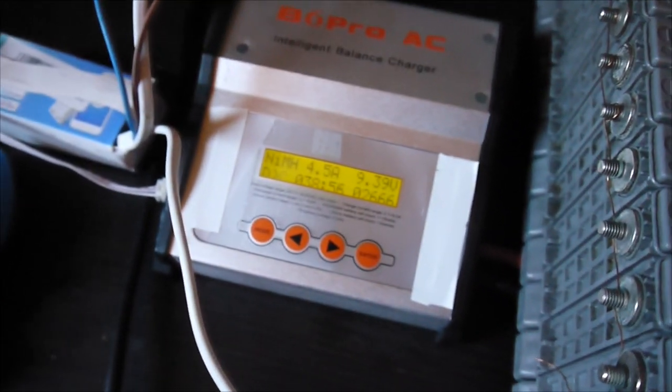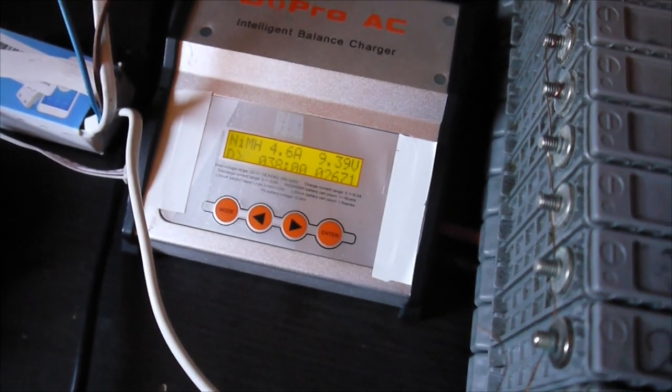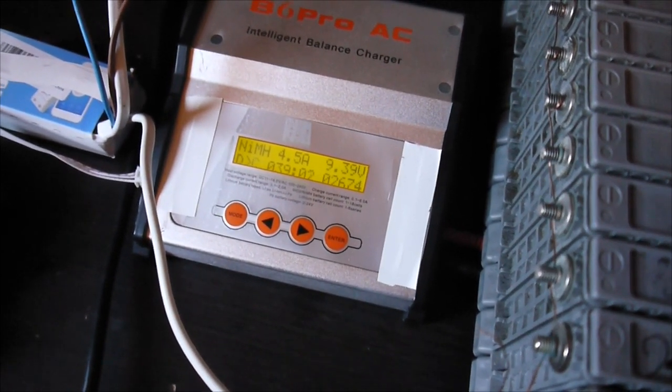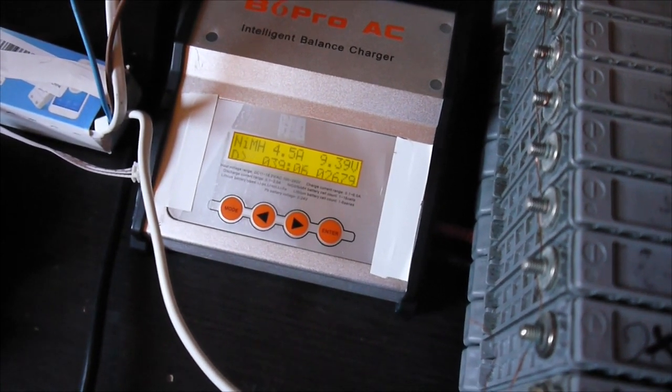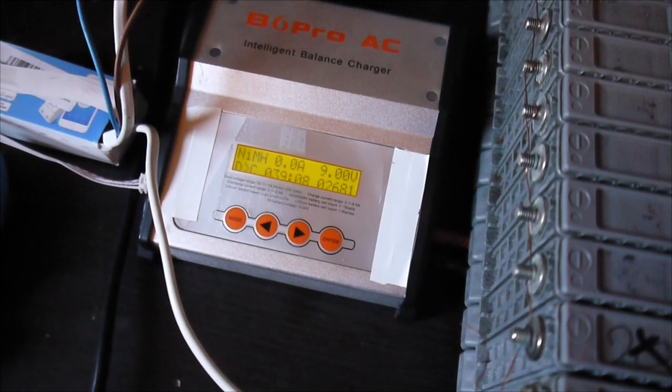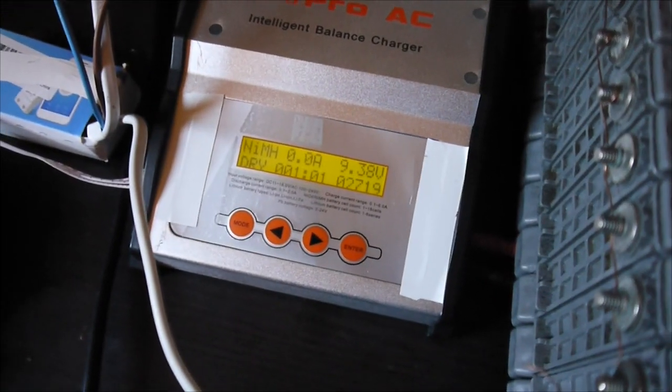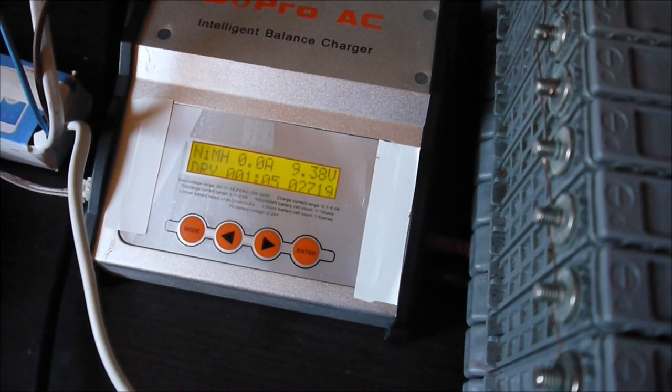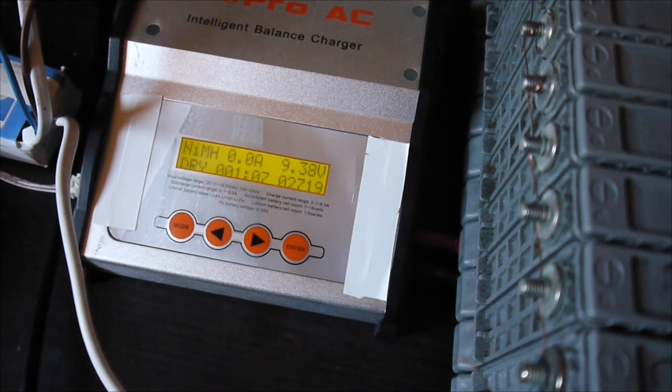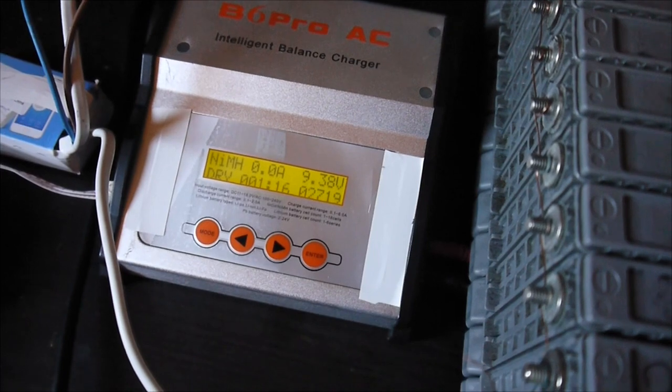After a cycle of charging, I'm going to show you how the modified iMax B6 Pro is acting and working. So one of the charging cycles is done. It charged the battery to 2719 milliamps.